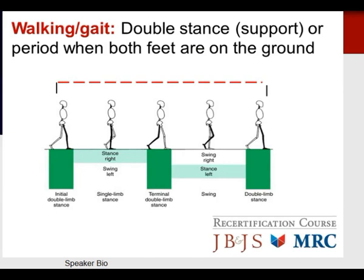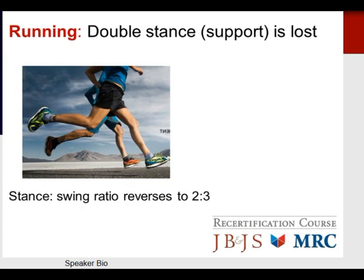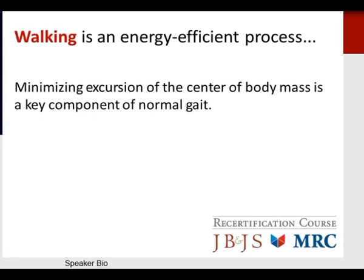The double stance or support phase is the period when both feet are on the ground. Walking and gait are essentially an alternation of stance and swing phase with a residual double stance support phase in the middle. Running represents the double stance support being lost as often both feet are in the air, and the stance and swing ratio reverses in a two-to-third manner.